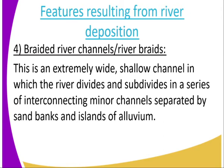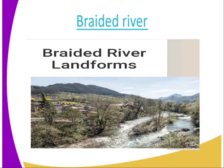The braided river channels, or the river braids. This is an extremely wide, shallow channel in which the river divides and sub-divides in a series of interconnecting minor channels separated by sandbars and islands of alluvium. That is how the river braids look like.